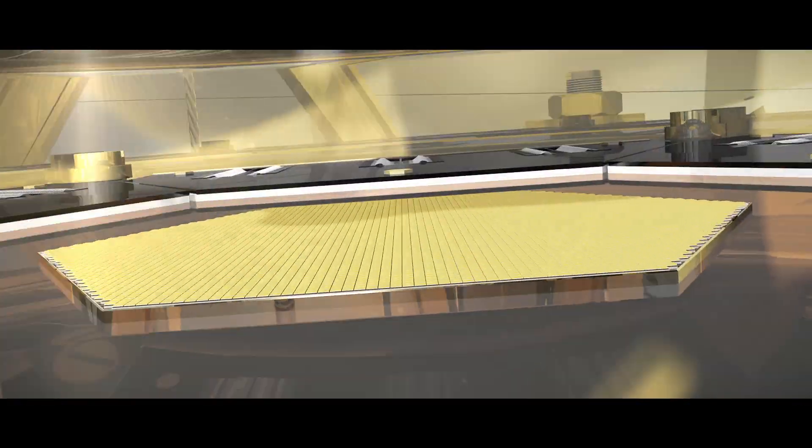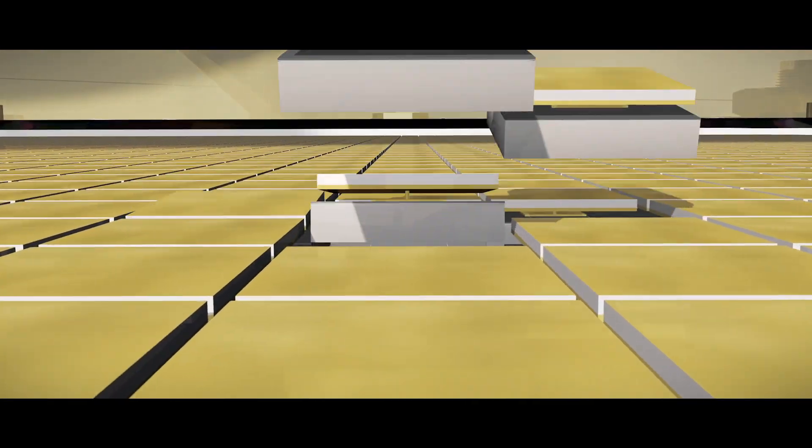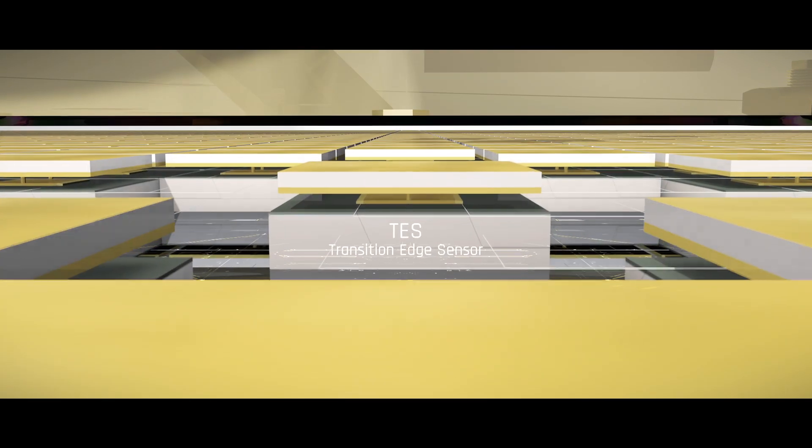Thousands of microcalorimeters absorb the photons and convert their energy into a tiny amount of heat. Then, superconducting thermometers transform these short-temperature spikes into pulses of electric current.